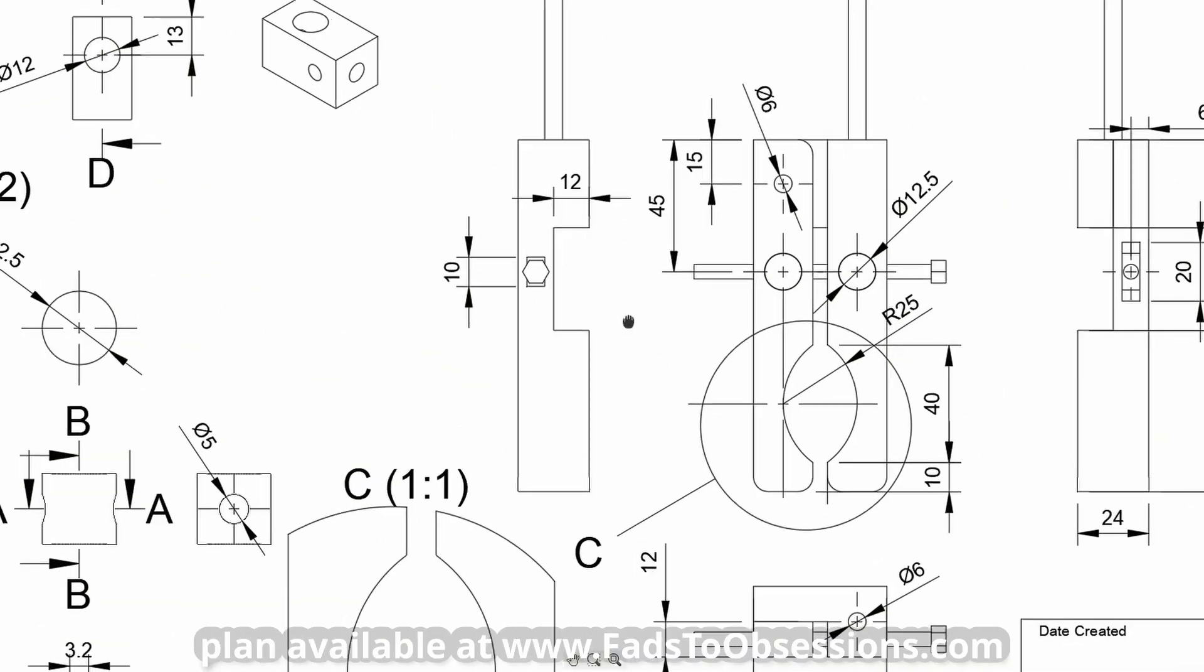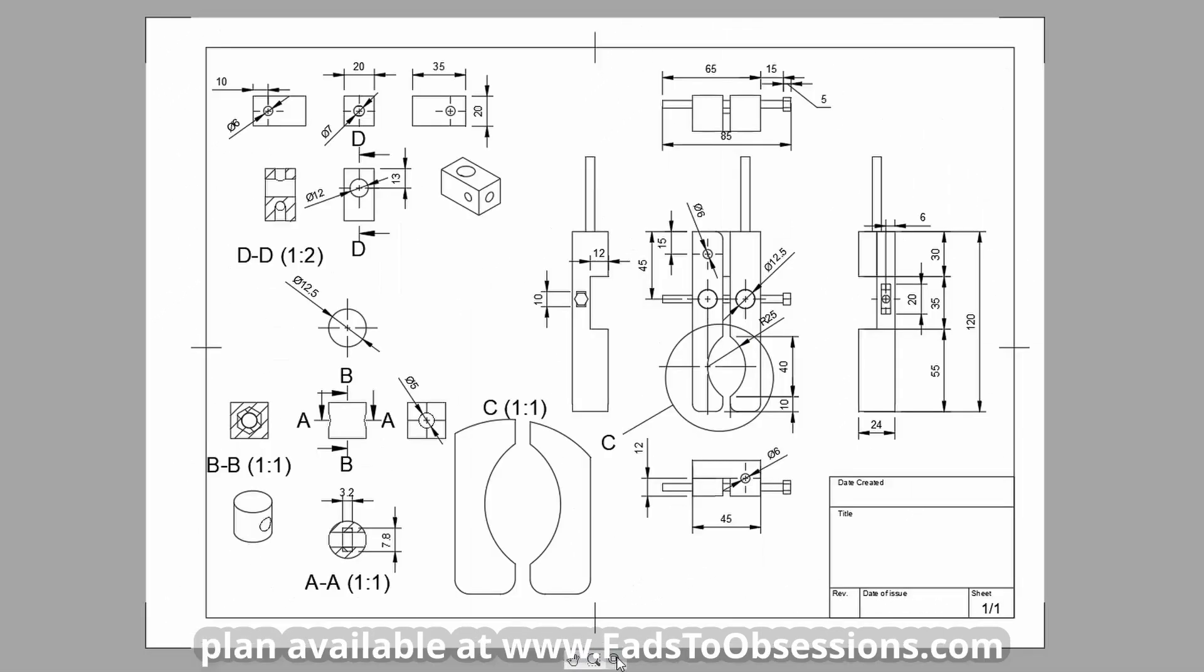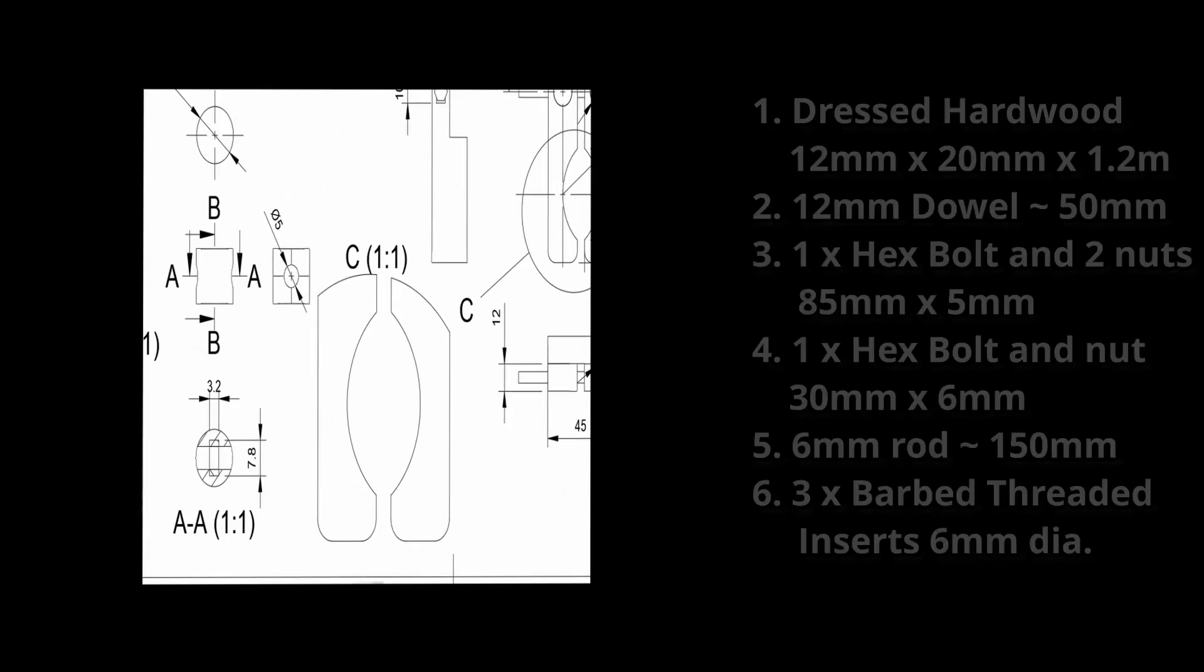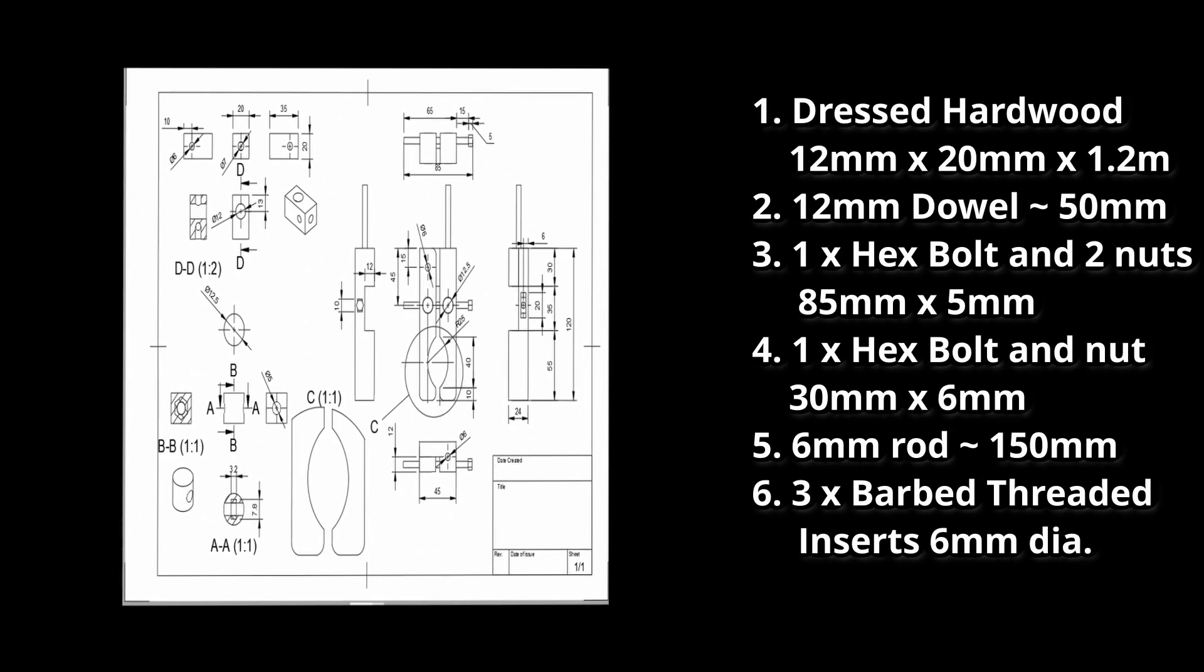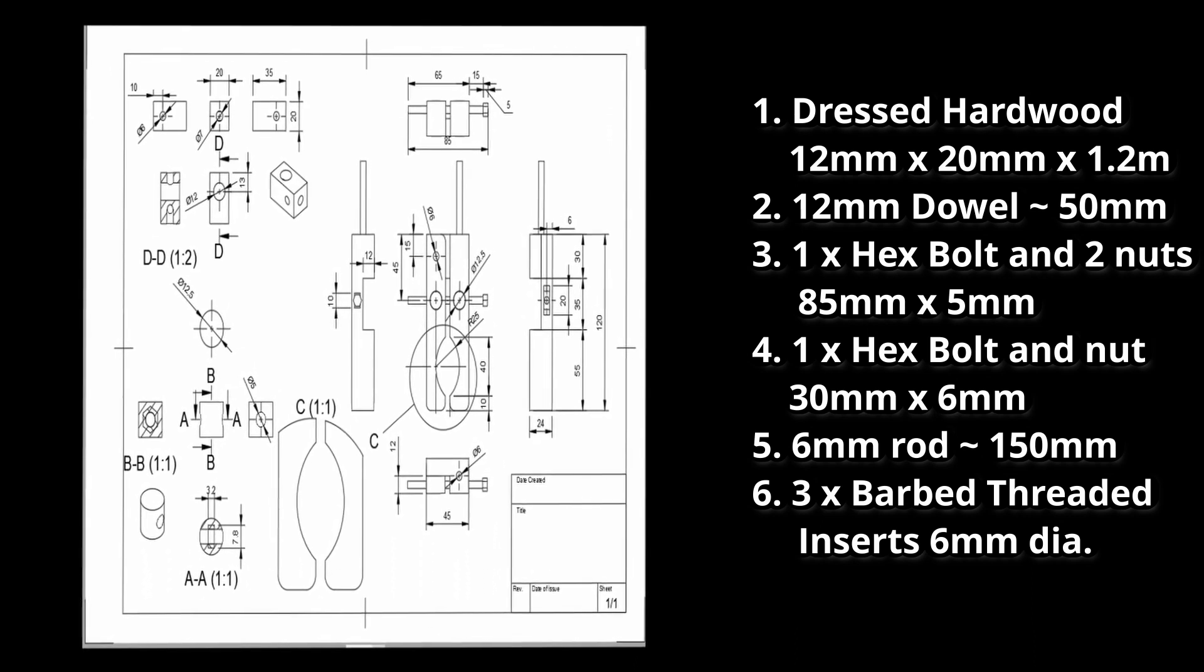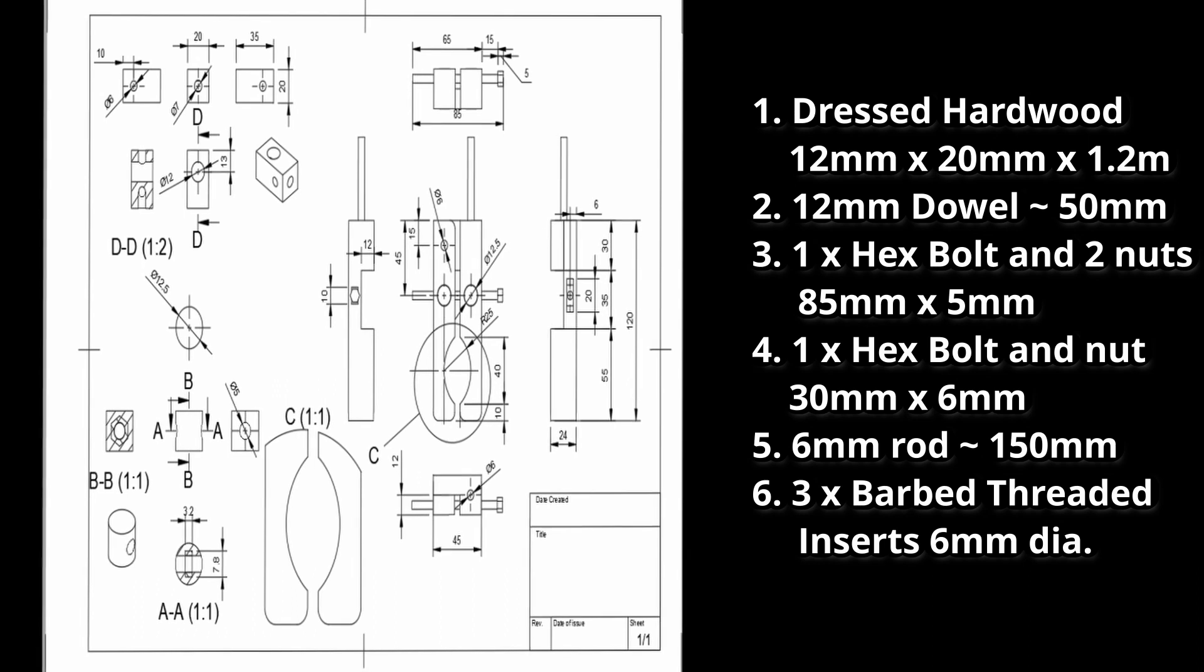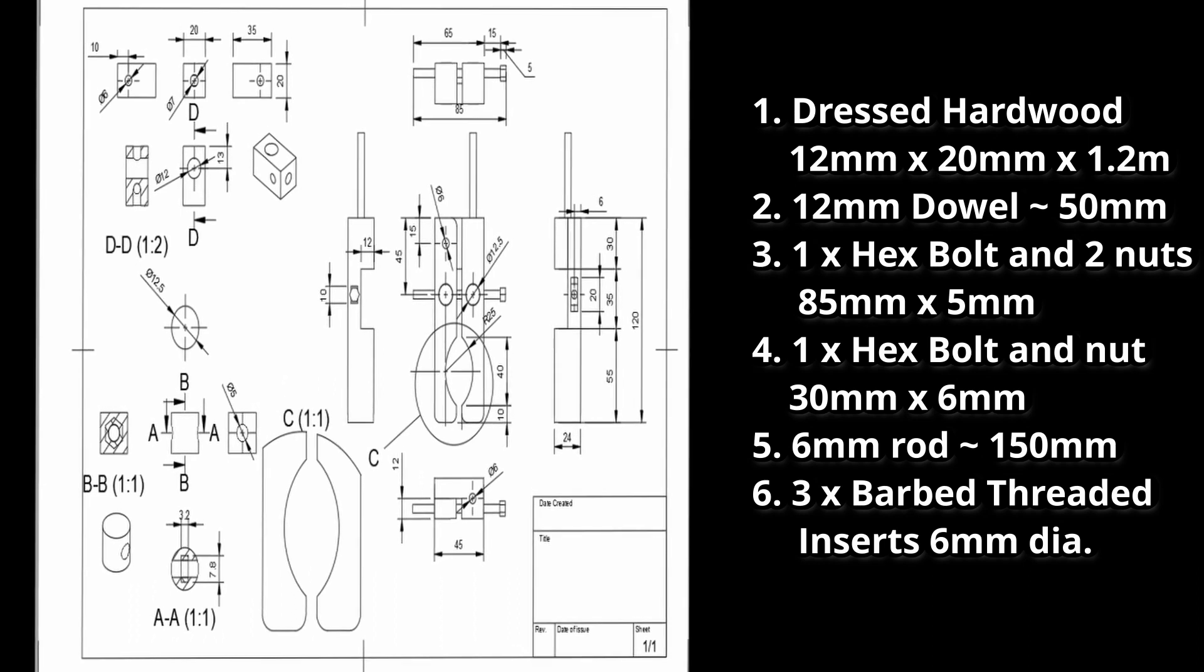The design was done in Fusion 360, which allows generating dimension drawings from which you can work out your cut list. The hardware required and cut list is shown, and is based upon stock 20x12mm dressed hardwood, available from my local hardware store. The various hex bolts and dowel are similarly standard and should be readily available.